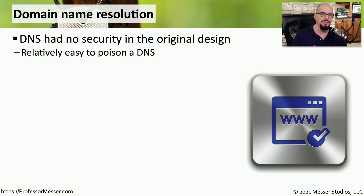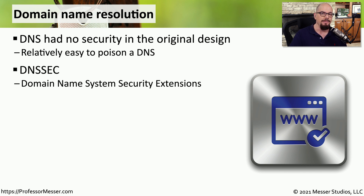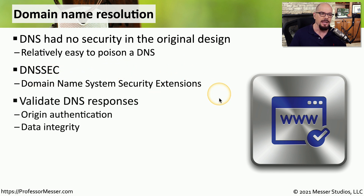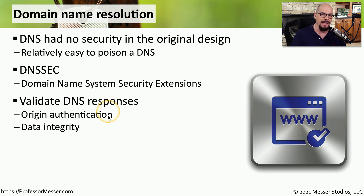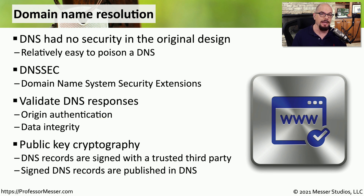In the previous video, we described some of the DNS security mechanisms that we've recently created, because originally DNS was built with no security features in mind. We've added security features through the use of DNSSEC — Domain Name System Security Extensions — which adds the ability to confirm responses from a DNS server, giving us origin authentication and data integrity. We do this by adding public key cryptography and digitally signing the information on these DNS servers, with each record having that signed DNS information as part of the DNS server itself.